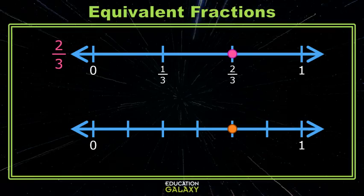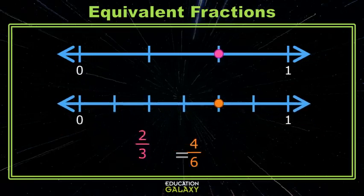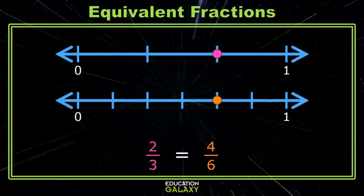On bottom, the number line's cut into six pieces, and the dot is four spaces over. It represents the fraction four sixths. You can see here that the dots represent the same distance along the number line. That means that they represent the same value. They are equivalent fractions.